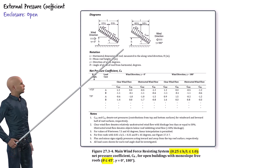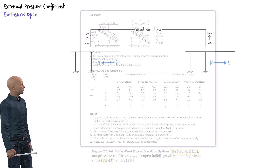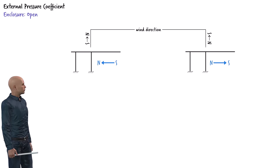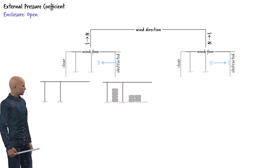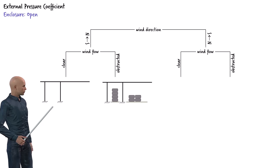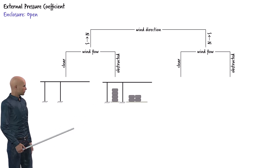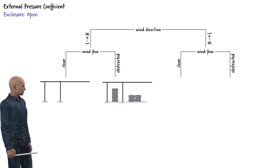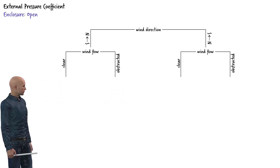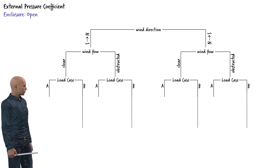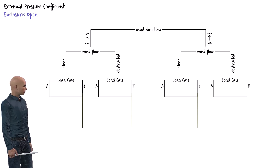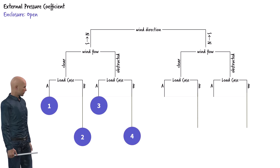As indicated in the figure, we need to consider wind from two opposite directions — wind blowing from south to north and from north to south. For each wind direction, the figure provides two possible conditions: one for clear wind flow, where there are no significant obstructions under the roof, and one for obstructed wind flow, where temporary equipment, walls, or other objects under the canopy could interfere with the wind. In addition, for each of these conditions, the standard requires us to consider two load cases labeled Case A and Case B. These cases represent different patterns of pressure distribution on the roof, giving us a total of eight sets of pressure coefficients.